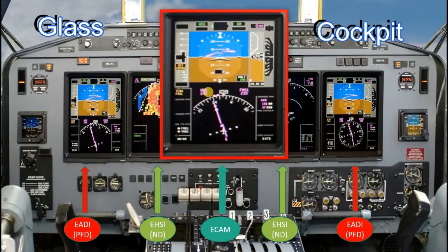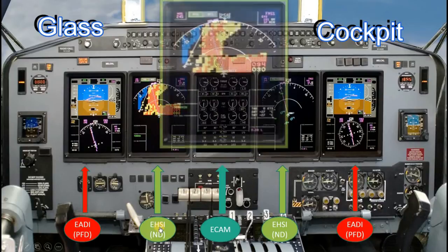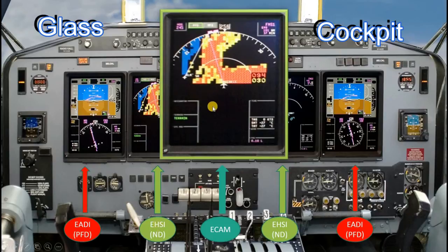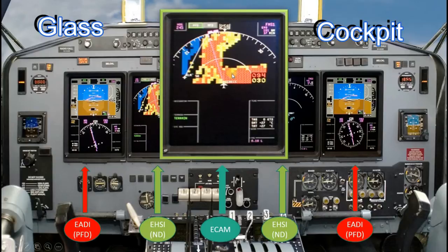The second portion of our Electronic Flight Instrument System is the EHSI — Electronic Horizontal Situation Indicator. The EHSI is also called a Navigation Display. As the name describes, the Navigation Display contains information related to navigation. In this example, we have a navigation display in which different colors represent the weather information present around the aircraft.